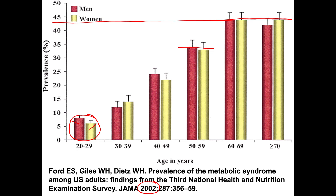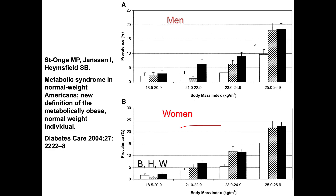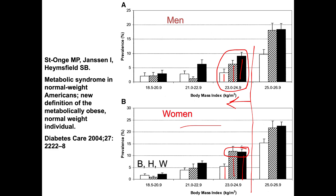Now, what about the normal weight or just slightly overweight population? Looking at normal weight and metabolic obesity — which is metabolic syndrome — for men up top and women down below: at a BMI of 23 to 24.9, almost 10% of white men have metabolic syndrome. Similarly for Hispanic and black men. Down below, about 12% of Hispanic women and 12% of white women are normal weight but metabolically obese.